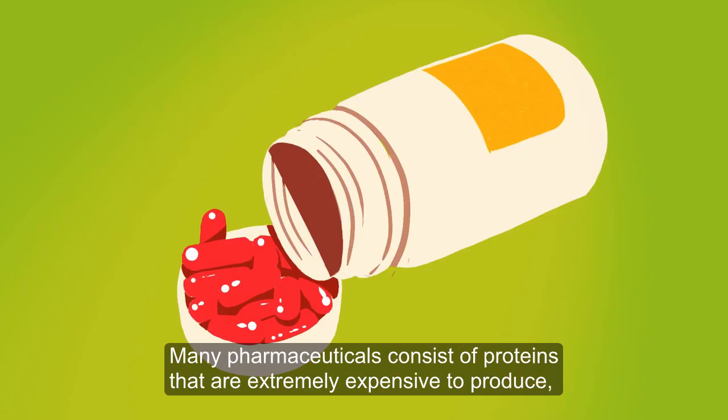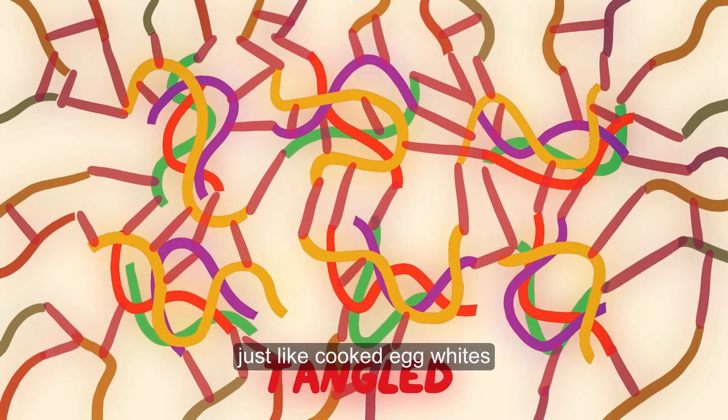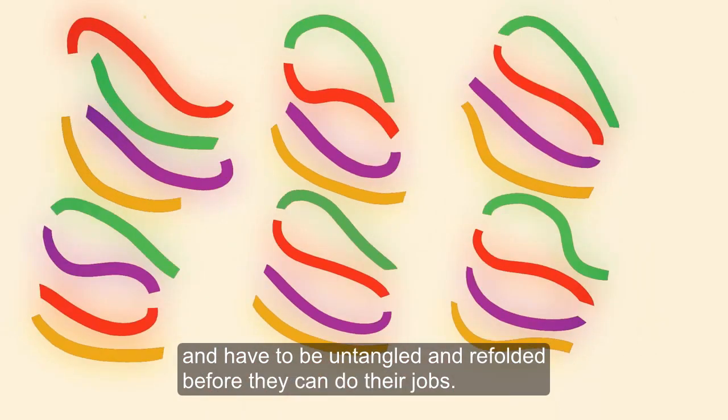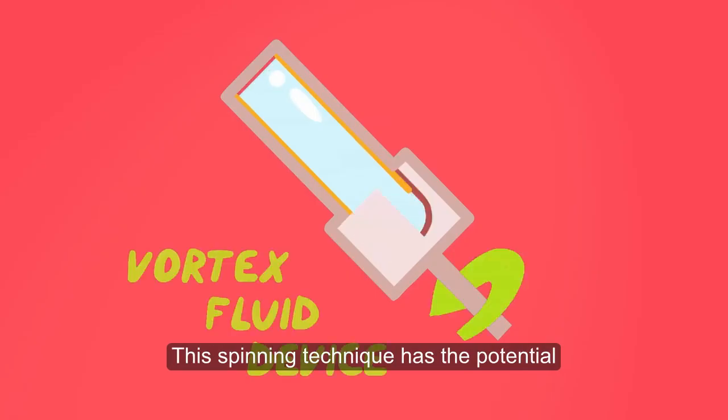Many pharmaceuticals consist of proteins that are extremely expensive to produce, partly because they get stuck in tangled up aggregates, just like cooked egg whites, and have to be untangled and refolded before they can do their jobs. This spinning technique has the potential to be an easier,